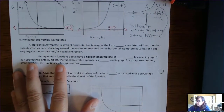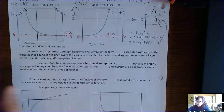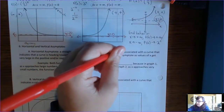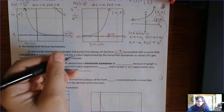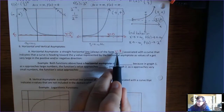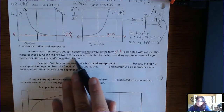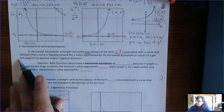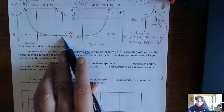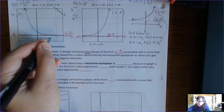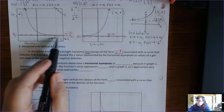Here's the formal definition of horizontal and vertical asymptotes. A horizontal asymptote is a straight horizontal line, always in the form of y equals a number. Sometimes people just put the number, but you have to give the equation of a line, so the 'y equals' part is important. It's associated with a curve that indicates the curve is heading towards the y value as x gets very large in the positive or negative direction. As x approaches infinity, y approaches 0.